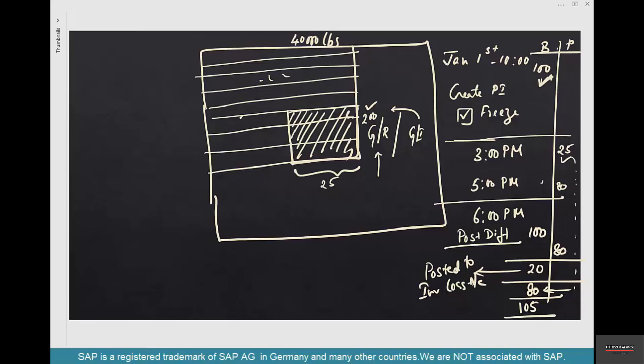This way you can ensure that goods receipts and goods issues can happen as usual, at least goods receipts, and you can still keep counting. Freeze the book inventory so that no changes will happen to the book inventory. Finally, the additional stock that has been received can be added after the counting has been done and the book inventory can be updated.